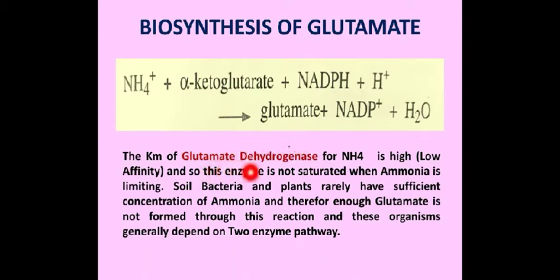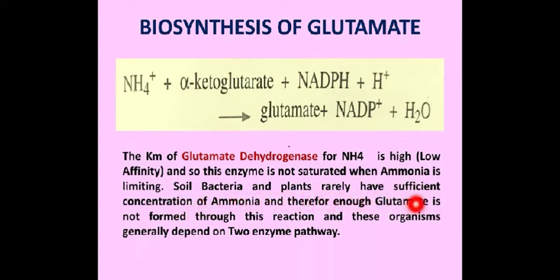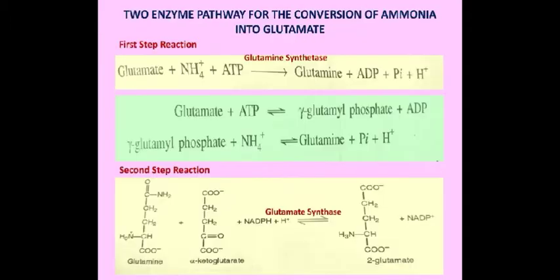Soil bacteria and plants rarely have sufficient concentrations of ammonia, and therefore enough glutamate is not formed through this reaction. These organisms generally depend on a two-enzyme pathway for the synthesis of glutamate from ammonia.